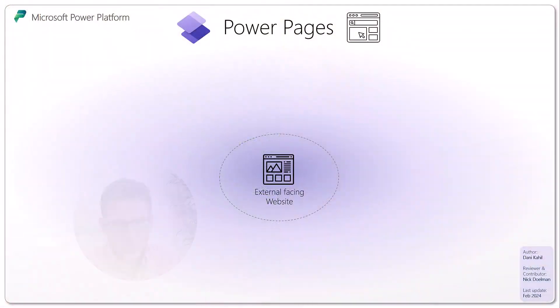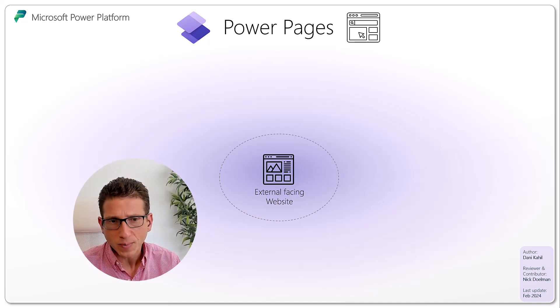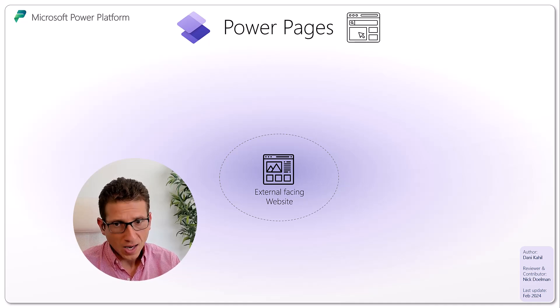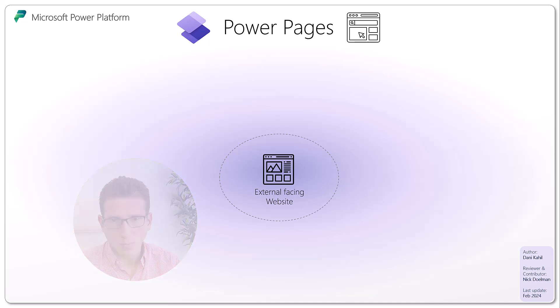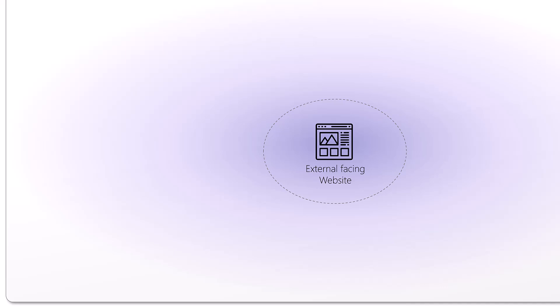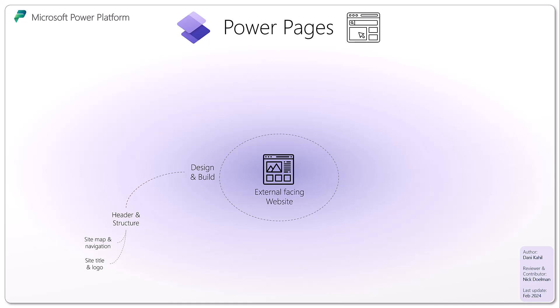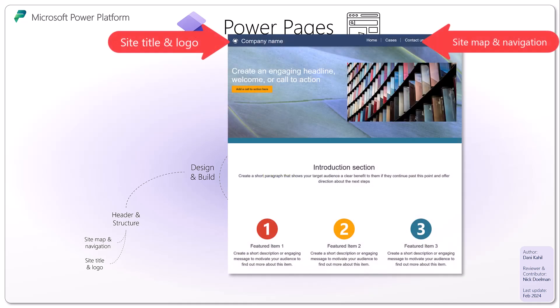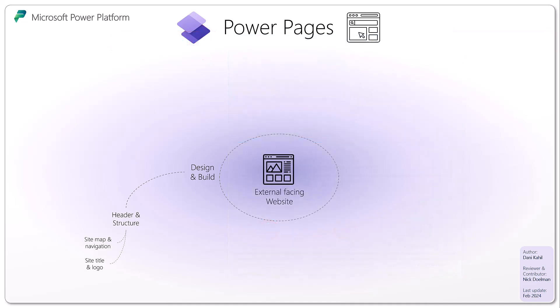We use Power Pages basically to create external-facing websites on the Power Platform, integrating directly with data in Dataverse. The first thing you do is design and build your website — starting with a header and structure, which means working on the site map, navigations, buttons, and how to navigate from one page to another. You can also work on the site title and logo using editors and designers.